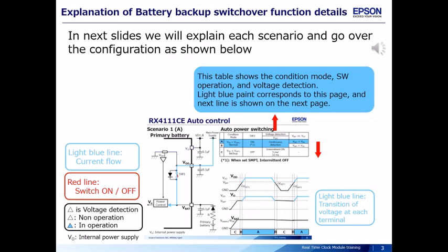The block diagram shows current flow by light blue line, switch on/off by red line, and voltage detection by triangle. In case of an operation, it's painted in light blue color. The timing chart shows the transition of voltage at each terminal.